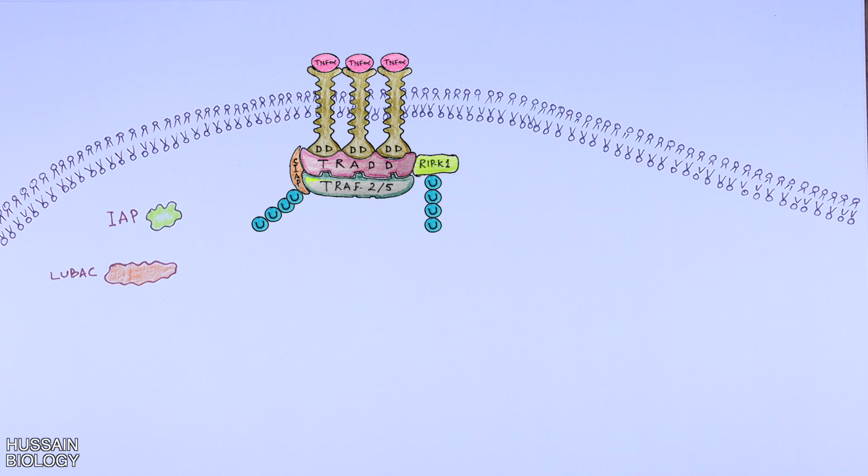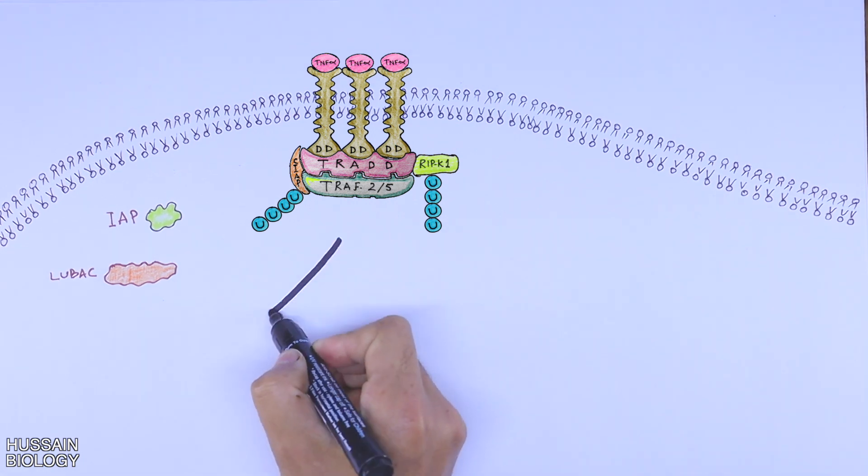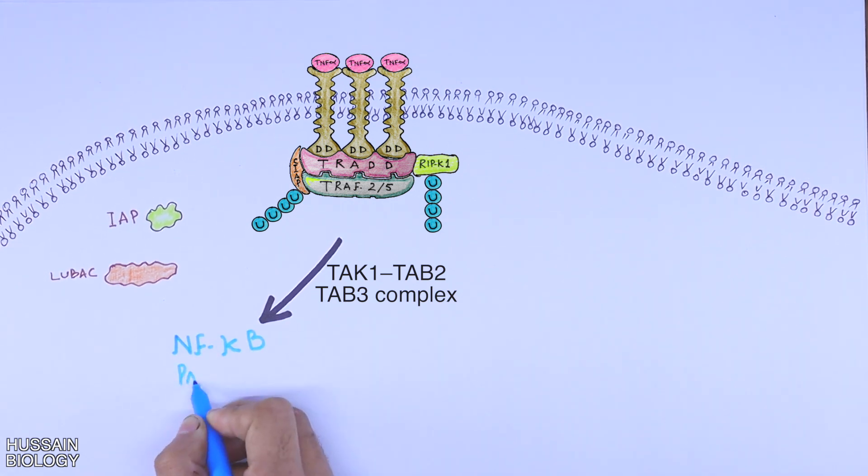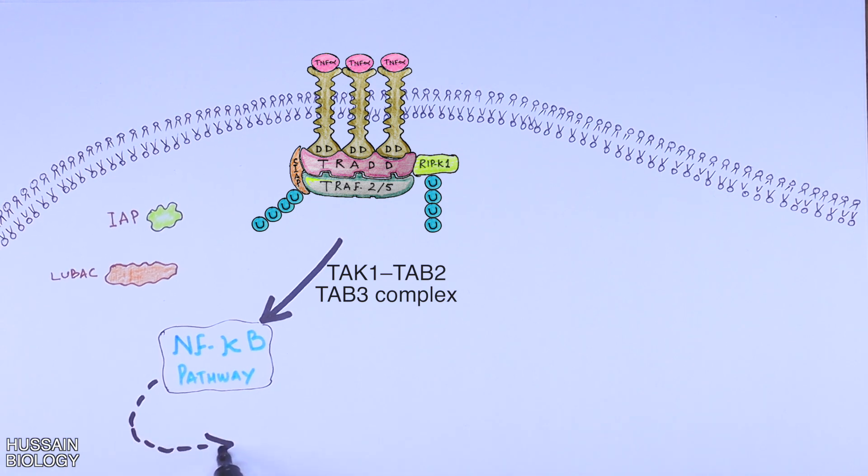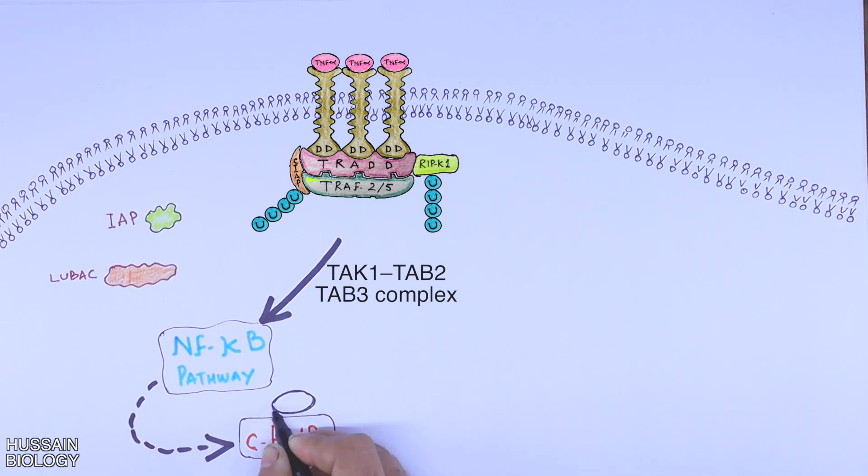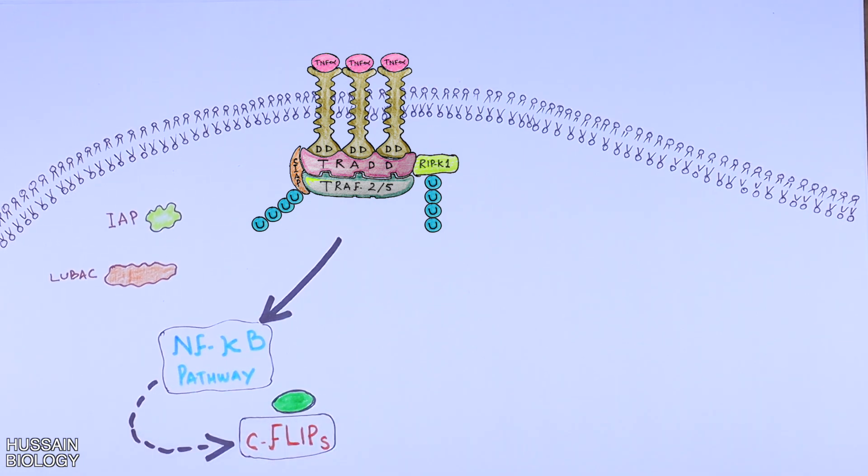It leads to activation of TAG1, TAG2, TAG3 complex, which in turn activates NEMO protein, that finally leads to NFKB pathway activation. This NFKB pathway activates CFlip S molecules. The detailed NFKB pathway is already discussed in the video linked in the description. Now we stop here because we need the CFlip S molecule later in the necroptosis pathway.